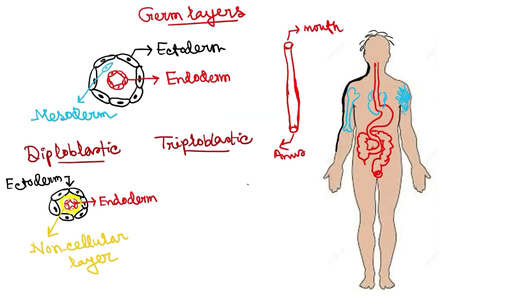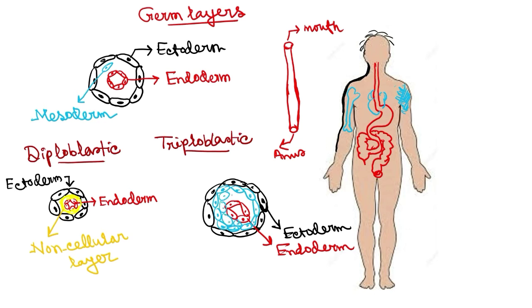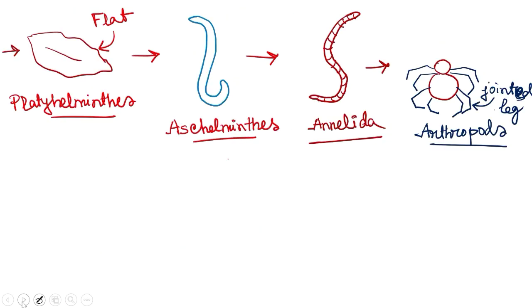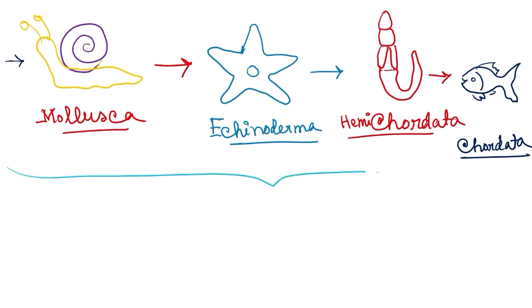Triploblastic animals have all three germ layers: ectoderm, endoderm, and also the mesodermal germ layer. This type of germ layer arrangement can be found from Platyhelminthes to Chordates — all of them are triploblastic.